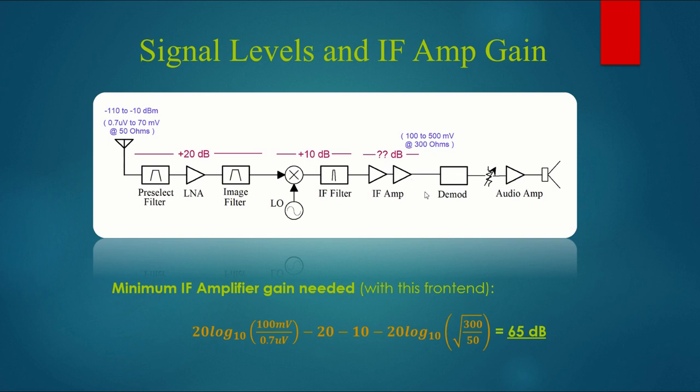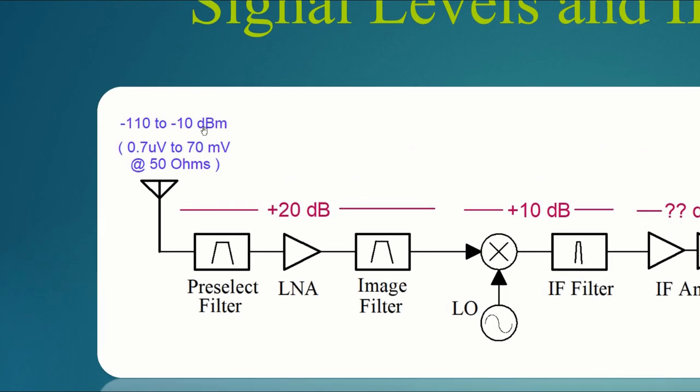But before we do all of that, we've got to figure out how to design these pieces. And we'll start off by looking at the IF amplifier. And the question is, how much gain do we need? To figure that out, we've got to look at the signal levels that may be coming in from the antenna. Here, I've labeled those as minus 110 to minus 10 dBm. That's a broad range of signal levels, but this is typical for real-world radios. If the antenna used is a 50-ohm antenna, then these power levels convert to these voltage levels. So we're talking about something from 0.7 microvolts, or 700 nanovolts, up to 70 millivolts.